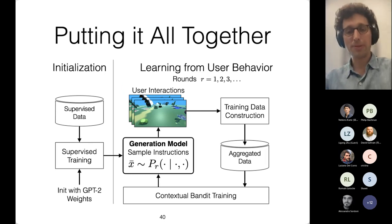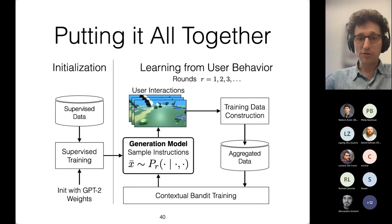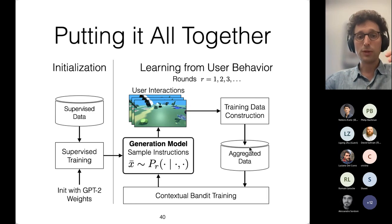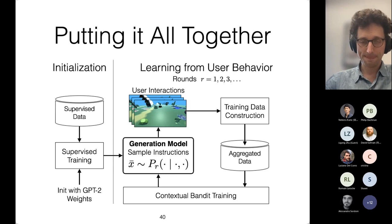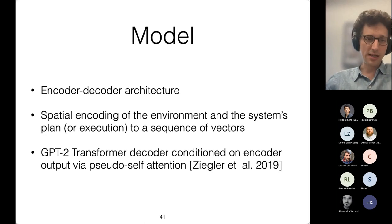Going back to the overview diagram: we initialize with GPT-2 weights and small supervised data, then deploy our generation model in rounds, sampling instructions from our probability distribution while interacting with users. From interactions we get five-element tuples, compute rewards to get training data that we aggregate over time, then do contextual bandit training to get a new probability distribution for the next round. The model architecture is a conventional encoder-decoder: we encode the plan and state as a sequence of vectors using spatial encoding, then take GPT-2 and extend it to reason about these encodings using pseudo-self-attention.